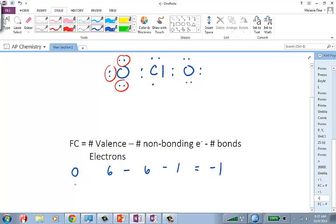Let's look at chlorine. So the other oxygen is negative one as well. Chlorine starts off with seven valence electrons. The number of non-bonding electrons is two and three, minus the number of bonds is one and two. So that has a formal charge of plus two.